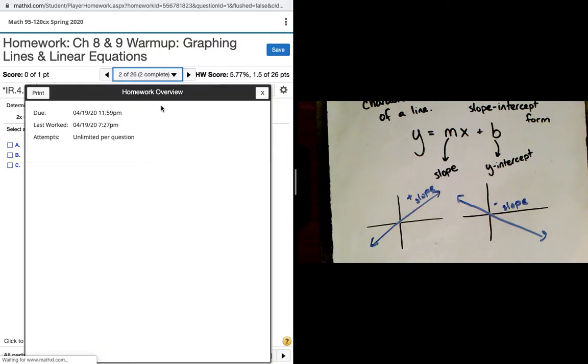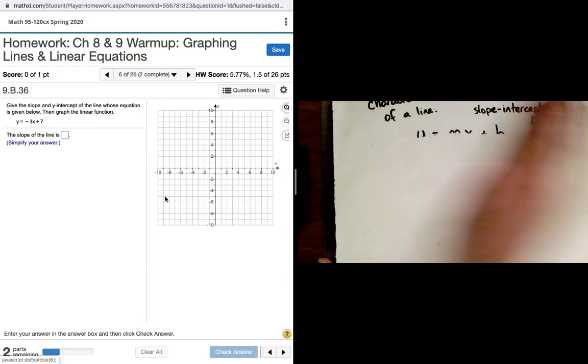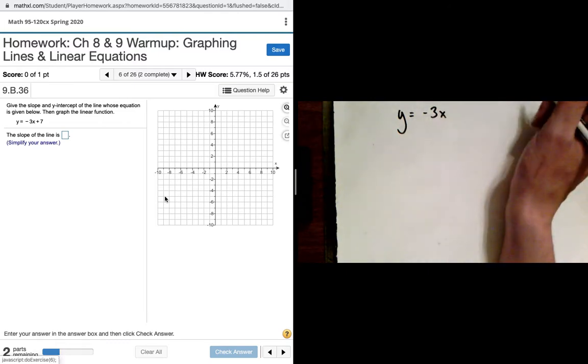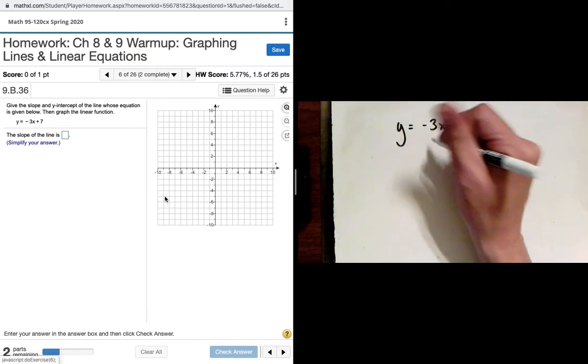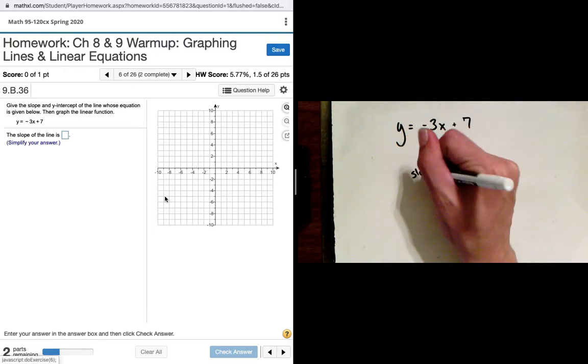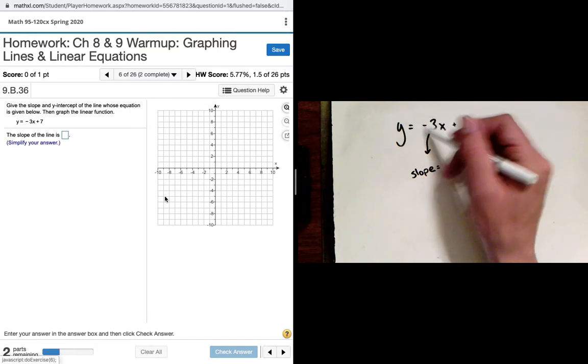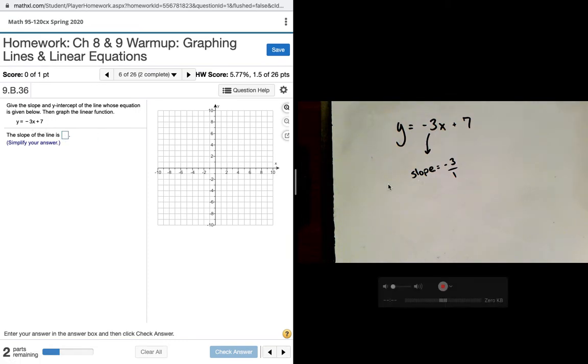So using that information, let's try a problem. The problem we have here gives us the equation of a line in slope-intercept form. It gave us y equals negative 3x plus 7. It wants us to identify the slope and the y-intercept, and then we're going to graph it. So again, the number attached to x plays the role of the slope. For graphing purposes, I always want to express slope as a fraction. So if it gives us a whole number right here, I'm going to give it a denominator of 1.